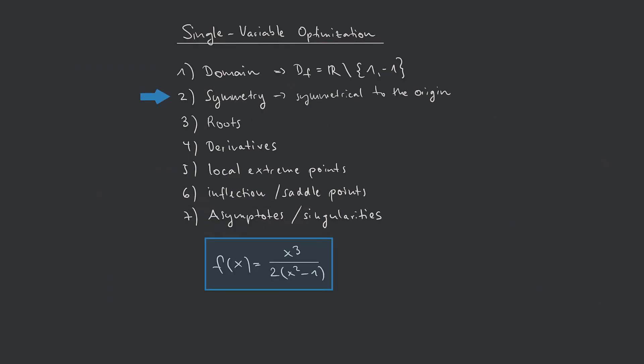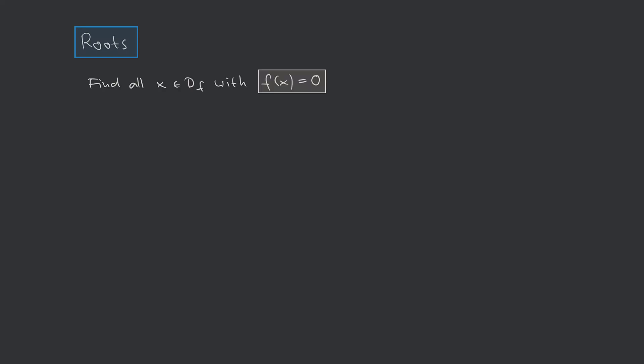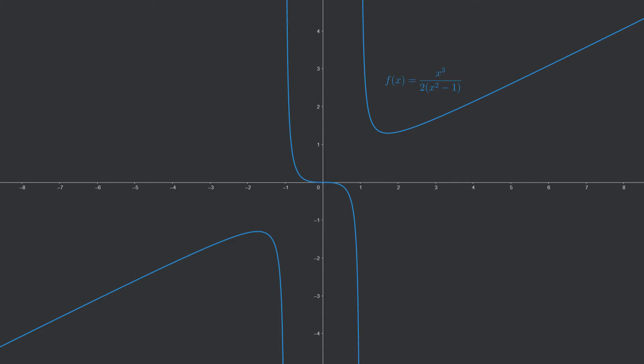The third step of the single variable optimization is to determine the roots of f. We have to find all x in the domain such that f(x) = 0. We set our function formula equal to 0. A fraction is zero if and only if its numerator is zero and the denominator is unequal to zero. So we solve x³ = 0, which gives x = 0. The only root of f is x = 0, which is in line with the graph.